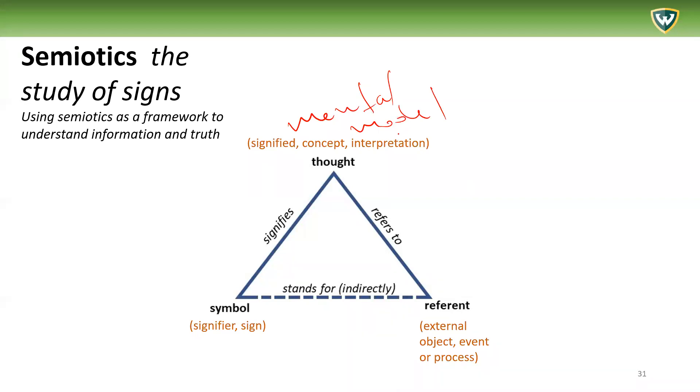Mental model - that's kind of a popular term nowadays. And then this mental model can refer to some referent or some external object, event, or process. So this is the objective reality, if you will.